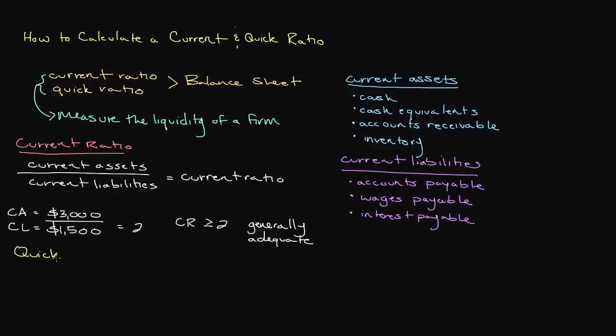The quick ratio is almost identical to the current ratio, however it attempts to solve one dangerous assumption that the current ratio makes. Is it reasonable for a firm to assume that it will be able to convert all of its inventory into cash within the next year? Unfortunately, it isn't. The truth is that inventory becomes obsolete quickly, especially for technology goods. Inventory also becomes damaged, stolen, and often just sits on store shelves. This assumption can be particularly harmful for a retailer which often carries a large percentage of its current assets in inventory due to the very nature of its business. In order to take a more conservative approach to gauging the liquidity of a firm, we can use the quick ratio.